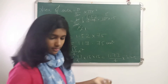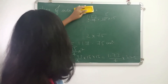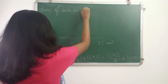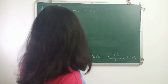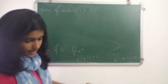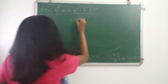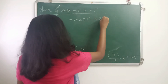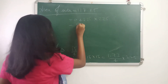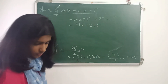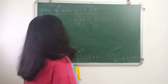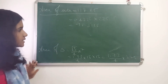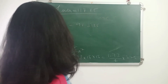1.73 by 4 into 225. There is no way to cancel them, so we do it manually. Dividing 1.73 by 4 we get 0.4325. Now 0.4325 into 225 gives us 97.3125. So the area of the triangle is 97.3125 cm squared.